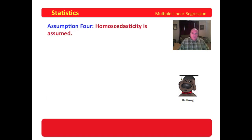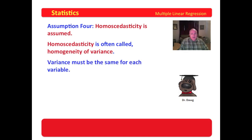Assumption four. Now, I love this word, homoscedasticity is assumed. Now, homoscedasticity is often called homogeneity of variance. Those of us with terrible Texas accents find it easier to say homogeneity of variance than we do homoscedasticity. Now, what homogeneity of variance assumes is that the variance across all of the little data sets, all of the variables, are the same. In other words, you have this.